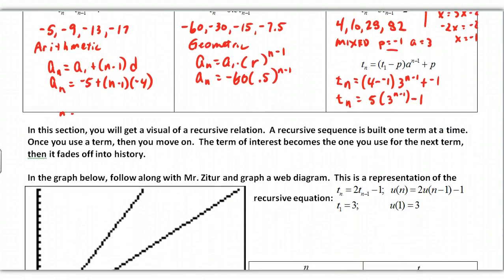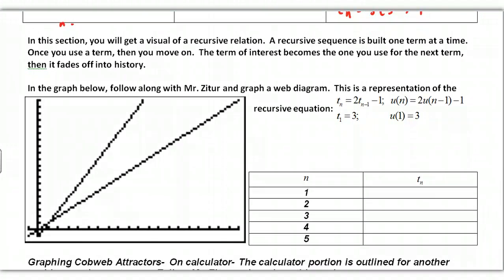Okay so now we want to get into a visual of a recursion relation. Now what happens with this recursion is you're plugging in a number getting a new number out. When you get that new number out you put it back in as kind of an X coordinate and so that's what we're going to do as a visual. We're going to do something that's called a cobweb diagram or a web diagram.